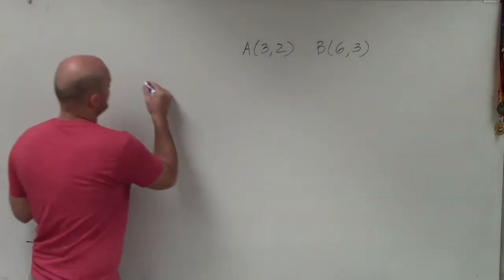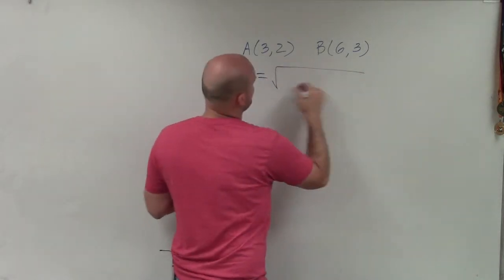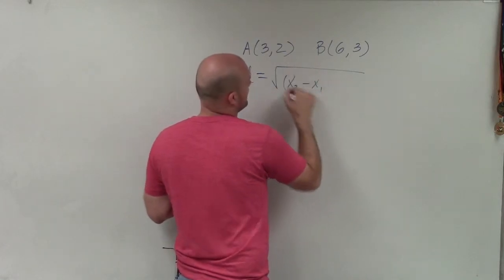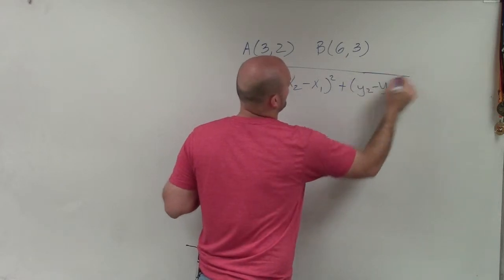So the first thing is, let's write in again what the distance formula is. The distance formula is going to be the square root of x2 minus x1 squared plus y2 minus y1 squared.